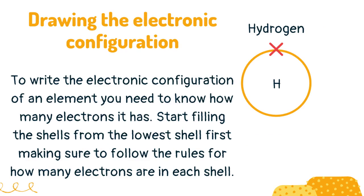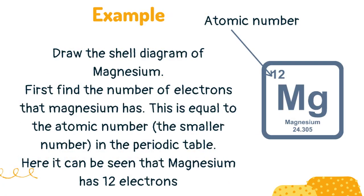To write the electronic configuration of an element, start filling the shells from the lowest shell first, making sure to follow the rules for how many electrons are in each shell. Now draw the shell diagram of magnesium.